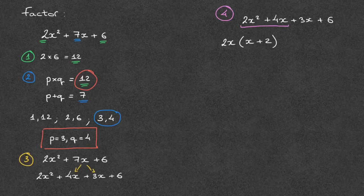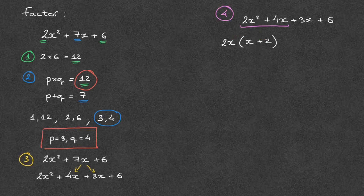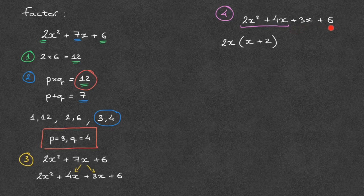Indeed, you can go ahead and check, but 2x times x would be 2x squared plus 2x times 2, which would be 4x. We now take care of the next two terms, this 3x plus 6. And here's how I do that.